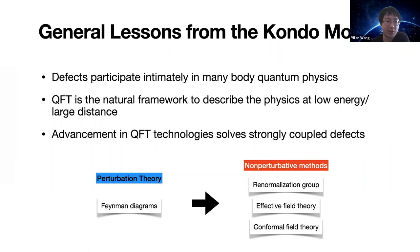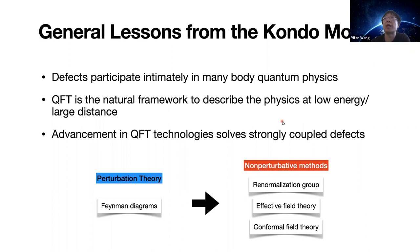What general lessons can we learn from the Kondo model? First, defects participate intimately in many-body quantum systems and can drastically change physical observables. Second, quantum field theory is a natural framework to describe physics at low energy or large distance. Finally, advances in technology greatly help in solving strongly coupled defects — in the Kondo case this came from renormalization group flow, effective field theory, conformal field theory, and integrability.